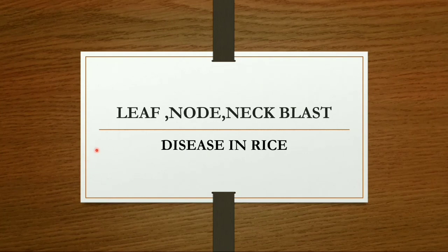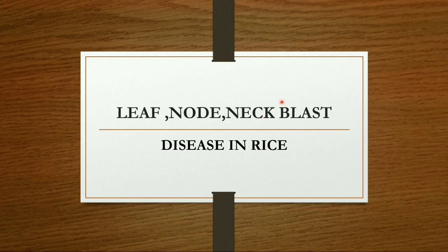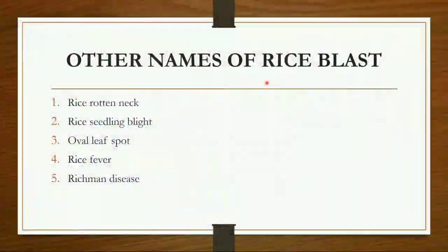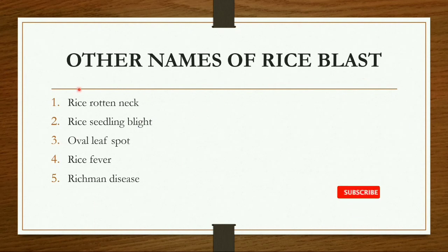Hi guys, welcome back to my channel Agriculture Makes Strong. Today I came with the topic of disease in rice. One of the diseases in rice is blast disease. There are leaf blast, node blast, and neck blast. We will discuss in detail the blast disease in rice. The other names of rice blast are: rice rotten neck, rice seedling blight, oval leaf spot, rice fever, and rich man's disease.